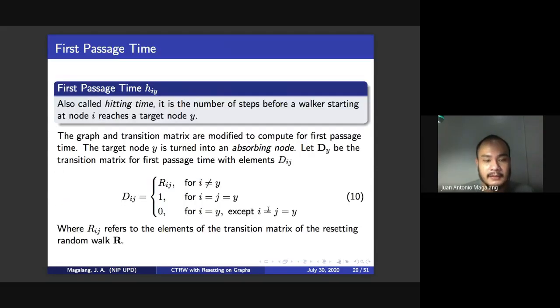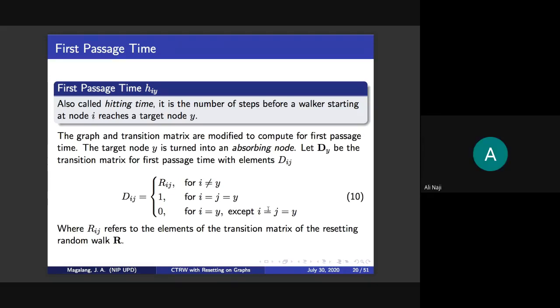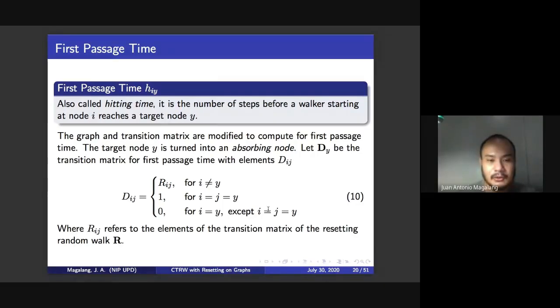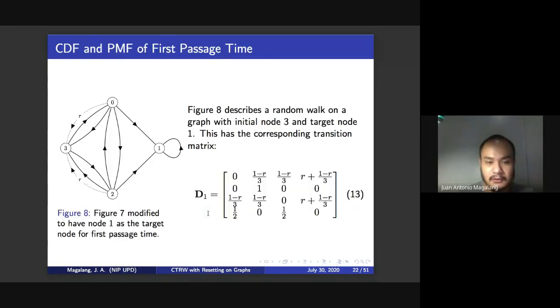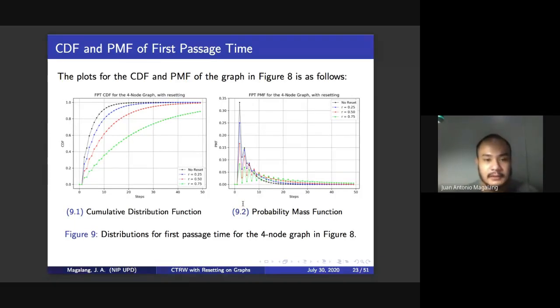So now we move on to first passage time. So we have two minutes. So we compute for first passage time by modifying this graph, the graph once again, and by modifying the transition matrix. And we obtain these two cumulative distribution functions and probability mass functions. And that essentially, again, modifies the graph and modifies the transition matrix. And we obtain these plots.